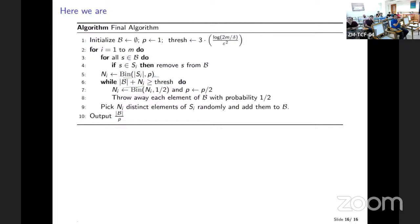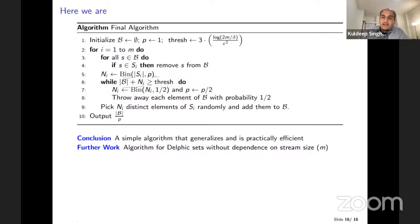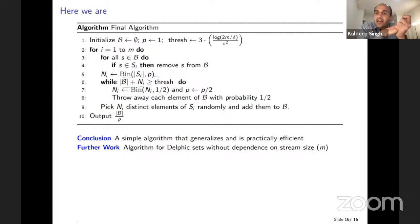That gets us to the final algorithm. Sample Ni from the binomial. If Ni plus the size of B is greater than threshold, resample Ni from the binomial, throw away every element with probability half until we ensure we'll pick less than threshold many elements. Then pick those elements using coupon collector. Our final estimate is the total number of elements in the bucket divided by P.